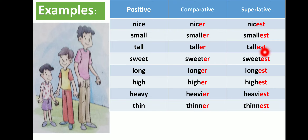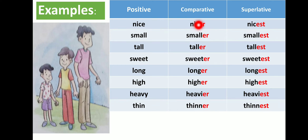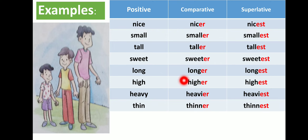Don't confuse — it's very easy. For comparative degree, add -er to the word; for superlative, add -est. For example: nice, nicer, nicest; small, smaller, smallest; tall, taller, tallest; sweet, sweeter, sweetest; long, longer, longest; high, higher, highest; heavy, heavier, heaviest; thin, thinner, thinnest.